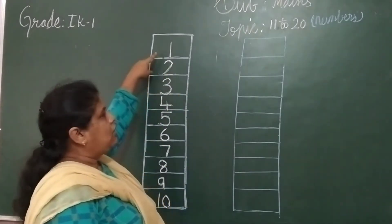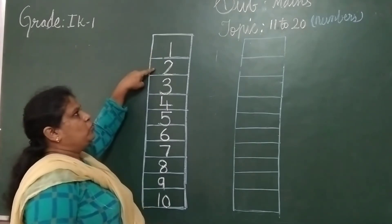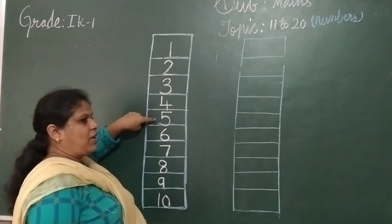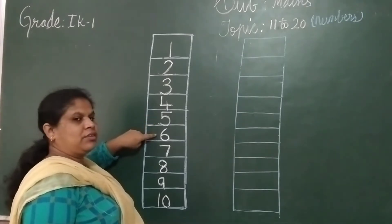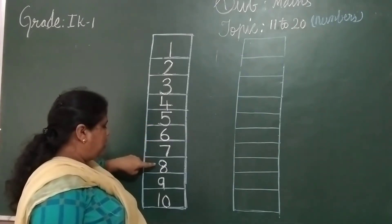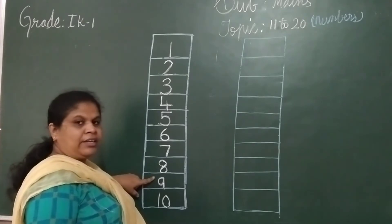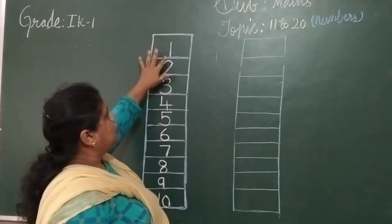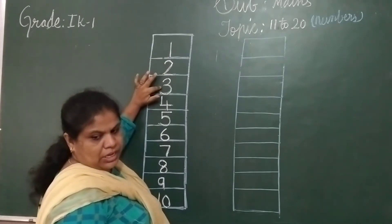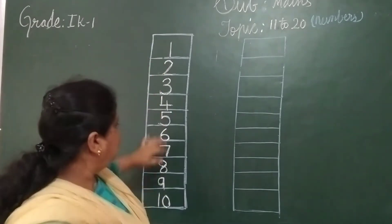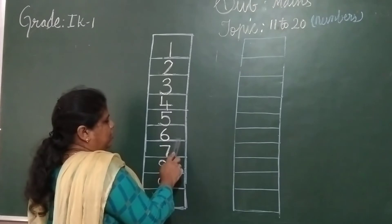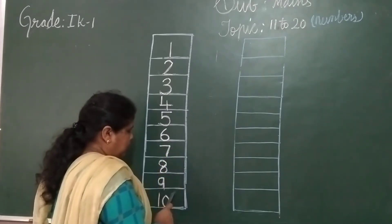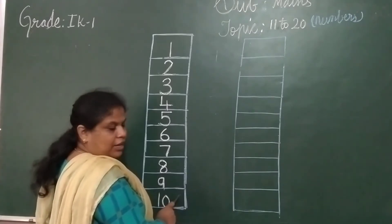First, see here: 1, 2, 3, 4, 5, 6, 7, 8, 9, 10. One more time: 1, 2, 3, 4, 5, 6, 7, 8, 9, 10. Okay?